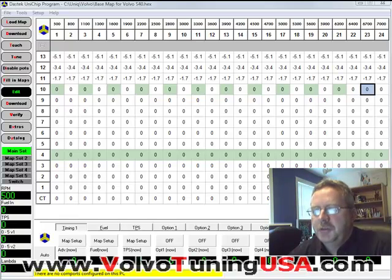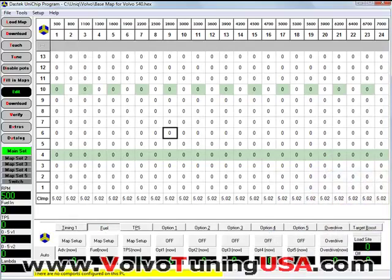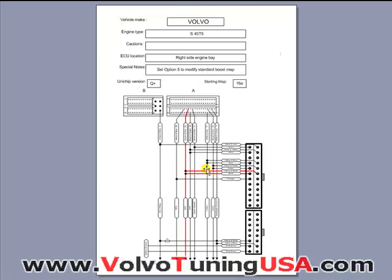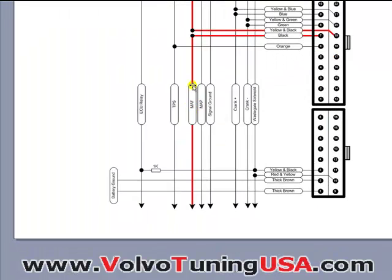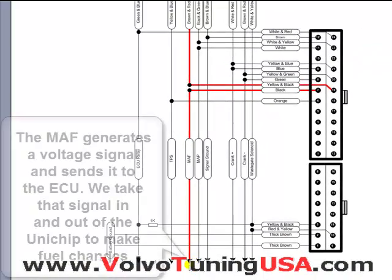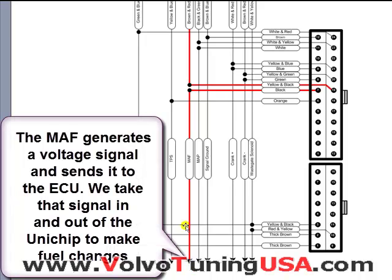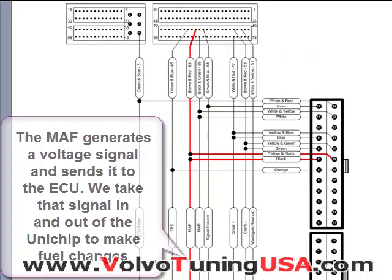In this video I'm going to show you how to make fuel changes. Let's take a look at a schematic first. If you zoom in, you can see that the mass airflow sensor is the one that we tied into to do the fuel changes. The signal is generated from the bottom by the mass airflow sensor, goes up into the unit chip, out of the unit chip, and back to the ECU.